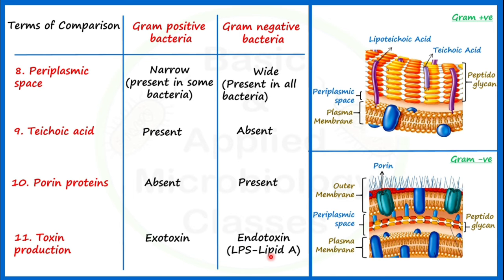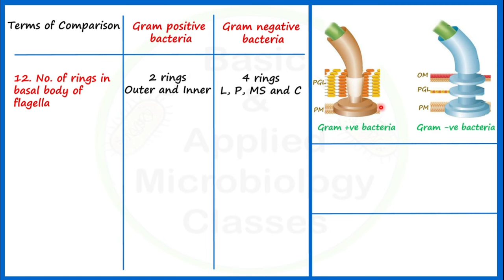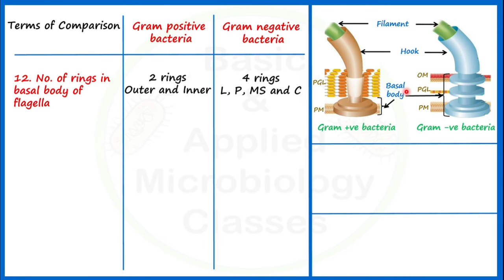Now the 12th point of difference: number of rings in the basal body of flagella. In gram positive bacteria, two rings are present — the outer ring and the inner ring. Let's understand the parts of flagella: the filament, the hook, and the basal body, which is embedded in the cellular envelope. In gram positive bacteria, the outer ring is linked to the peptidoglycan and the inner ring is embedded in the plasma membrane.